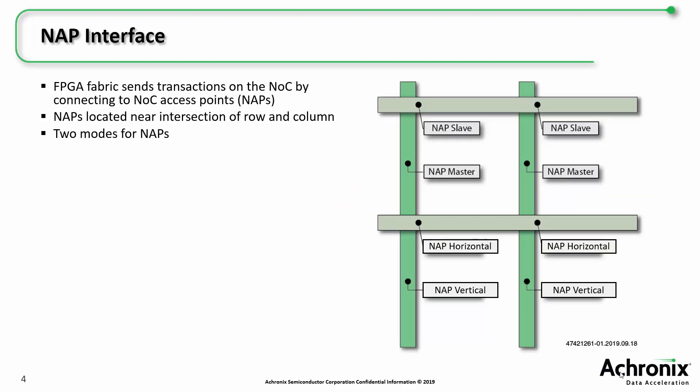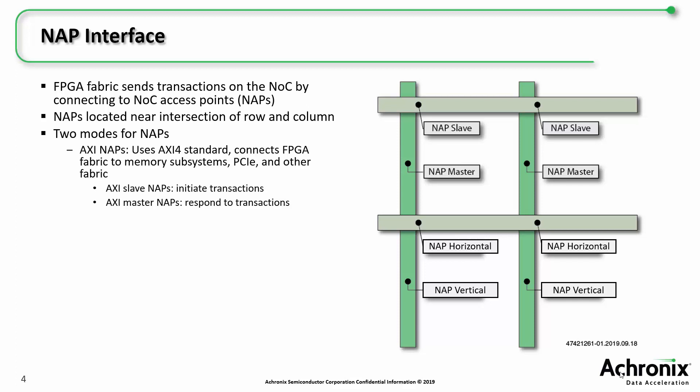The FPGA fabric sends transactions on the NOC by connecting to NOC access points or NAPs. NAPs are located near the intersection of a NOC row and column. There are two modes of NAPs: AXI NAPs, which use the AXI-4 standard — these connect fabric logic to memory subsystems, PCIe, and other points in the FPGA fabric.